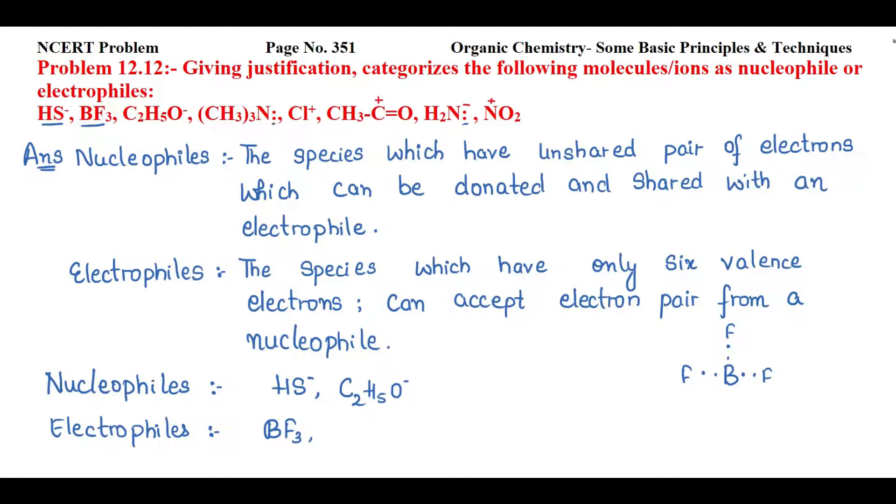So jis ke paas ek unshared pair of electron hota hai woh hum nucleophile consider karte hai so definitely yeh (CH3)3N yeh nucleophile aagya. Ab Cl positive dekhti hai.